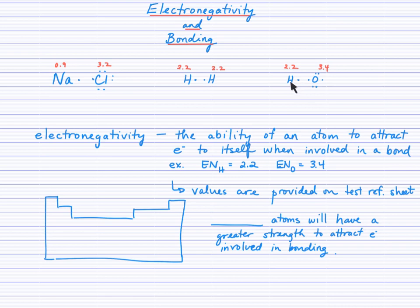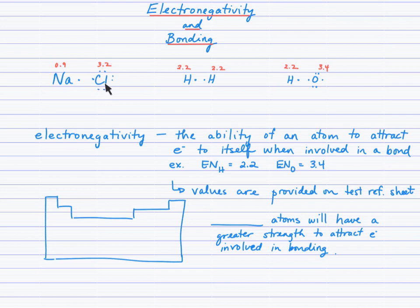So the question becomes: when the nuclei of these atoms are competing for the electrons between the two nuclei, are these electrons being shared equally or perhaps unequally, or is one of those atoms so much stronger that it will completely attract the electron to itself? We need a way of determining that when we look at the elements involved.